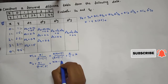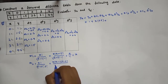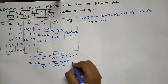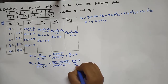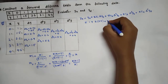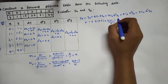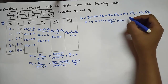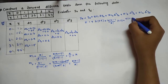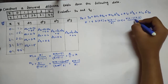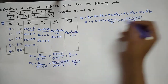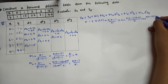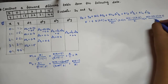Similarly, xC2 = x! / [(x−2)! · 2!] = x(x−1)(x−2)! / [(x−2)! · 2!] = x(x−1)/2. With Δ²y₀ = 0.2, the third term is x(x−1)/2 · 0.2. For xC3 = x(x−1)(x−2)/3!, with Δ³y₀ = 0, this term is 0.